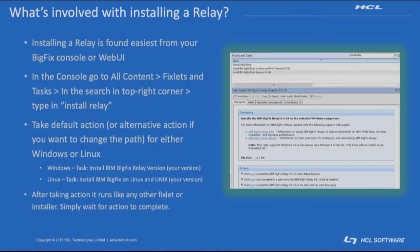To start, we install relays in BigFix in order to support additional agents and maybe lessen the load on existing relays. It also makes sense to place them logically, wherever it makes sense in the network. A good example would be at the other end of a site-to-site VPN where we're supporting patches on systems on the other end. It makes a lot more sense to have a relay perform all the downloads and communication for the clients beneath it, instead of having 100 systems reach through the pipe to gather content versus one. It's the idea of lessening network utilization, but also making communications a lot more predictable and local.